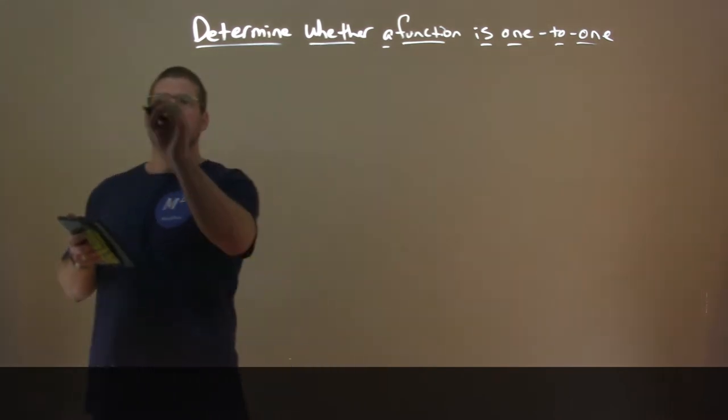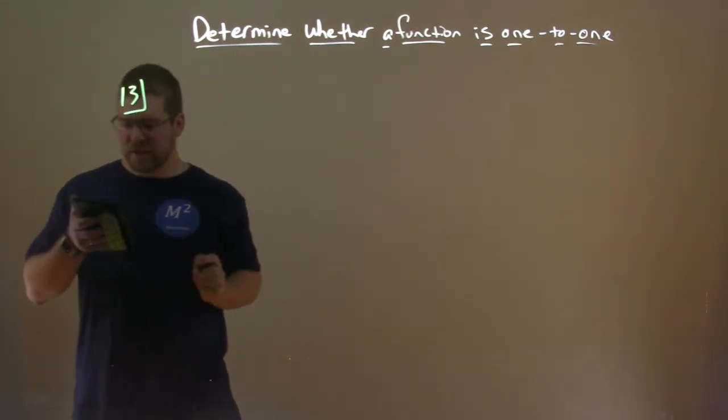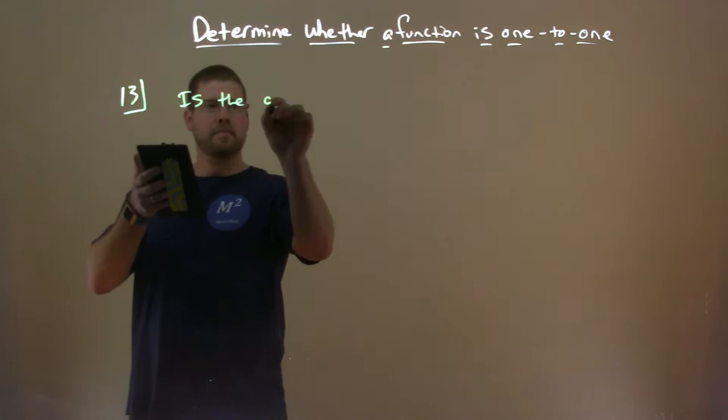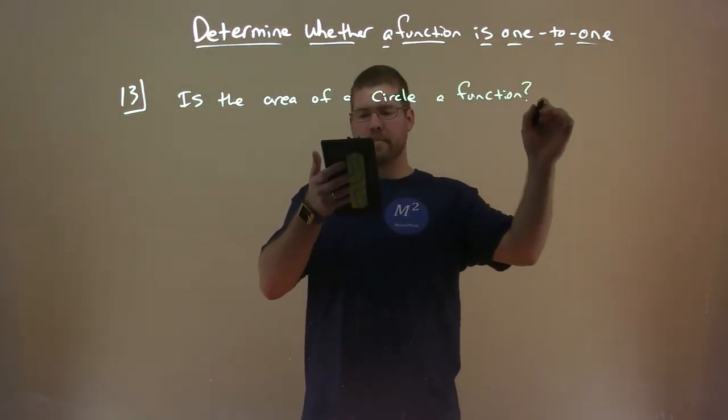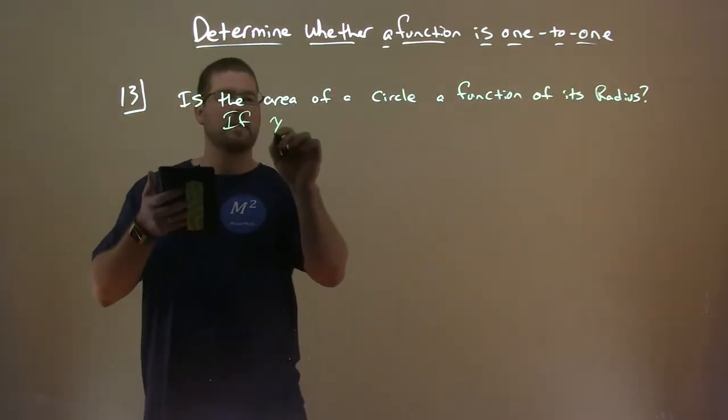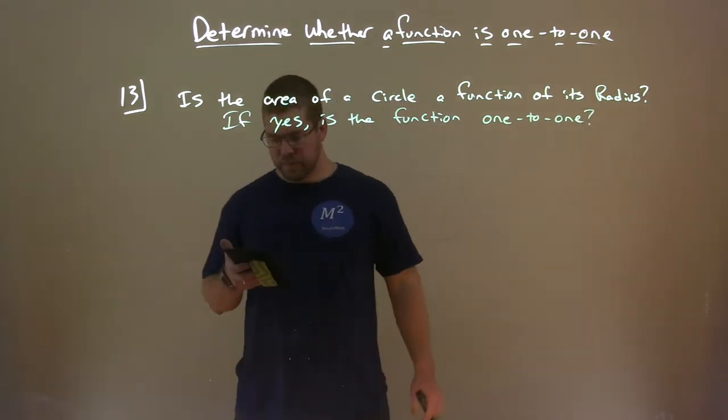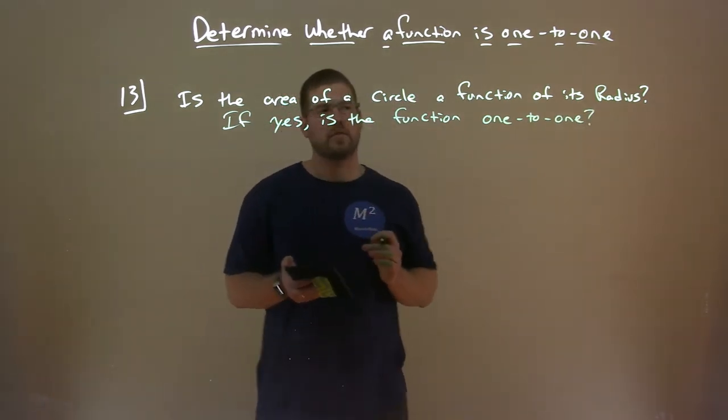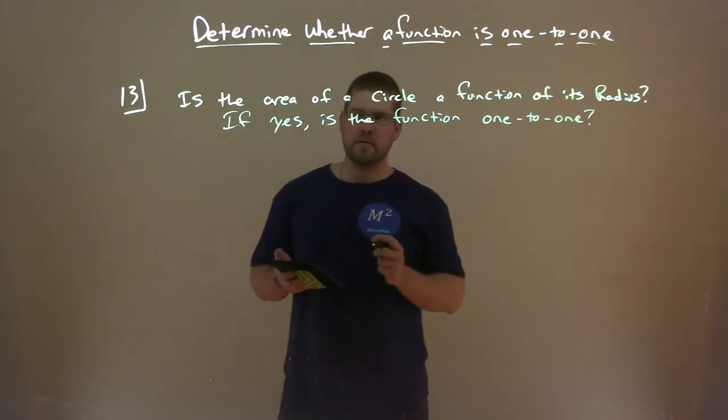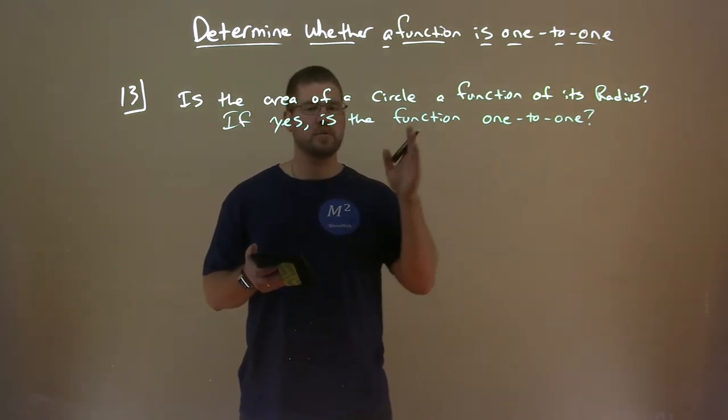So let's see an example here. The question is this: Is the area of a circle a function of its radius? If yes, is the function one-to-one?